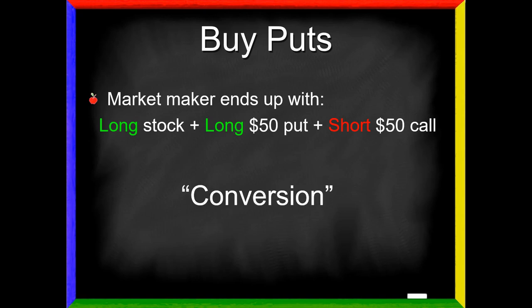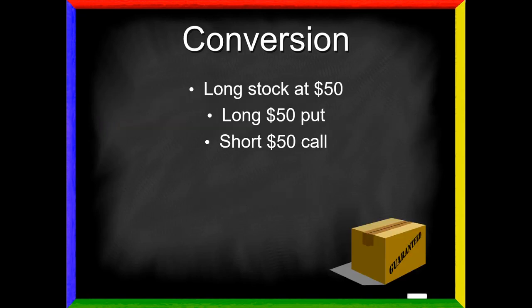When he does this, the market maker ends up with three different positions: long stock, long the $50 puts, and short the $50 calls. This three-sided position has a very special name in options trading, it's called a conversion. The opposite is a reversal or reverse conversion. These are important relationships in options trading. Let's recap the conversion: long stock at $50, long $50 puts, and short $50 calls. This combination results in a guaranteed sale of stock for the strike price. This package is really a guaranteed sale of stock for $50,000.